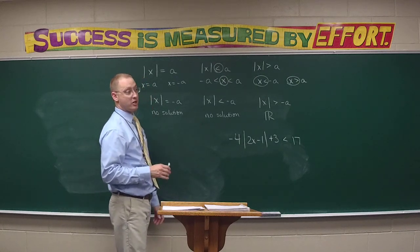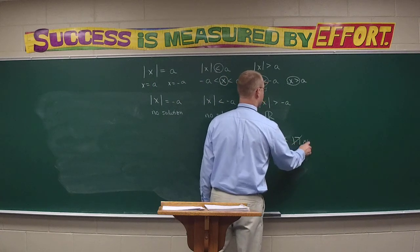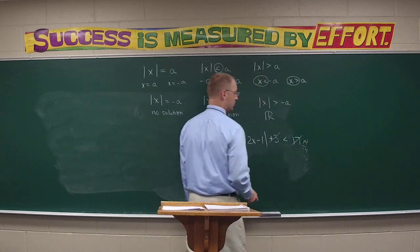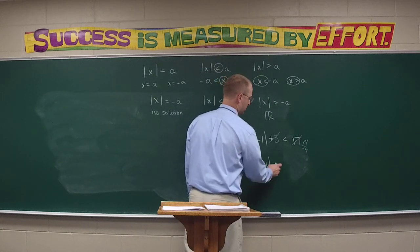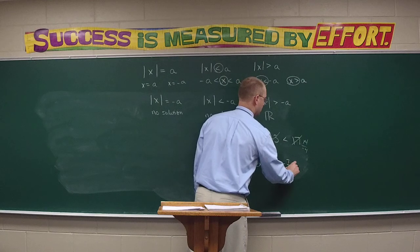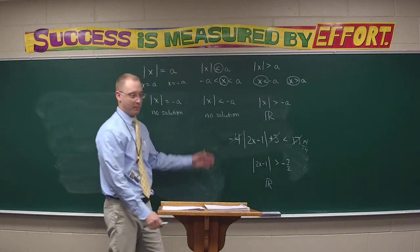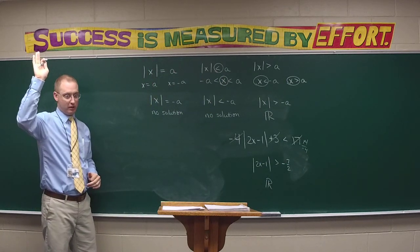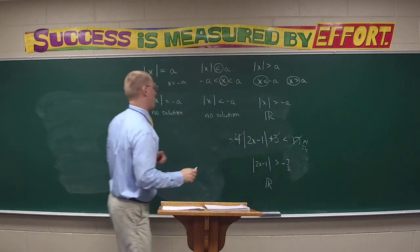Let's change this problem up. What do I need to do here, Brandon? Add 3 to get 14, then divide by negative 4. Then what? All real numbers, because it's greater than a negative. How many had all real numbers? How many had no solution? You forgot to flip the inequality around when we divided by the negative.